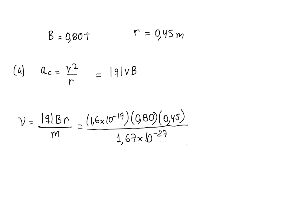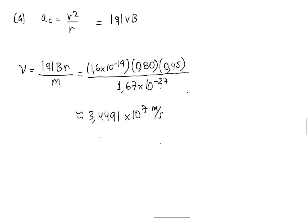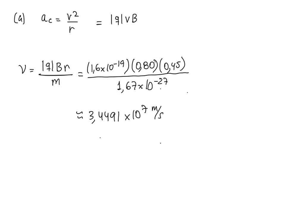The speed we obtain is approximately 3.4491×10⁷ meters per second. Remember, what we are asked to calculate is the maximum energy, so we calculate the maximum kinetic energy using its usual equation: KE = ½mv².